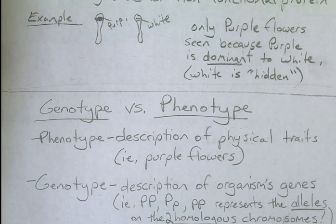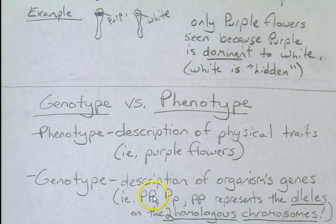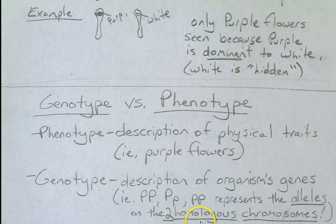Genotype versus phenotype: a phenotype is a description of the physical traits — remember 'ph' for both phenotype and physical. For example, purple flowers. A genotype is a description of the organism's genes; remember, you have two of every gene. For example, PP represents two dominant alleles (one on each chromosome); Pp represents one dominant and one recessive allele; and pp represents two recessive alleles. These represent the alleles on two homologous chromosomes.